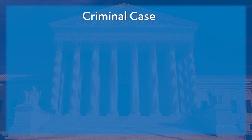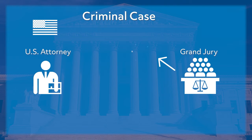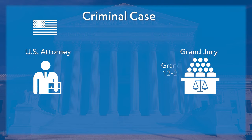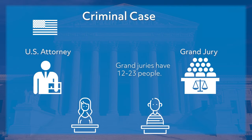The judicial process in a criminal case differs from a civil case in several important ways. At the beginning of a federal criminal case, the principal actors are the U.S. Attorney and the Grand Jury. The U.S. Attorney represents the United States in most court proceedings, including all criminal prosecutions. The Grand Jury reviews evidence presented by the U.S. Attorney and decides whether there is sufficient evidence to require a defendant to stand trial. Grand Juries have 12 to 23 people and help the prosecutor determine if they possess enough evidence to indict — to bring a formal accusation of a crime against a suspect — then bring them before the court to stand trial.